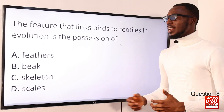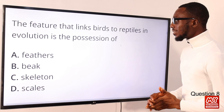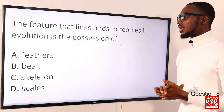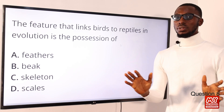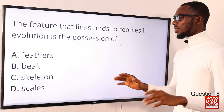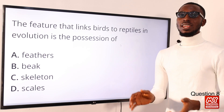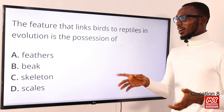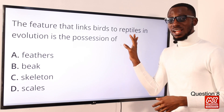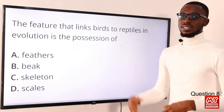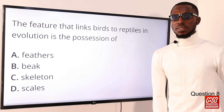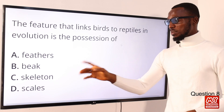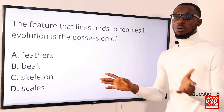Question 8: the feature that links birds to reptiles in evolution is the possession of what? You can find scales present when it comes to reptiles, as well as in birds when you check their feet — it's scaly. The correct option is option D for scales.